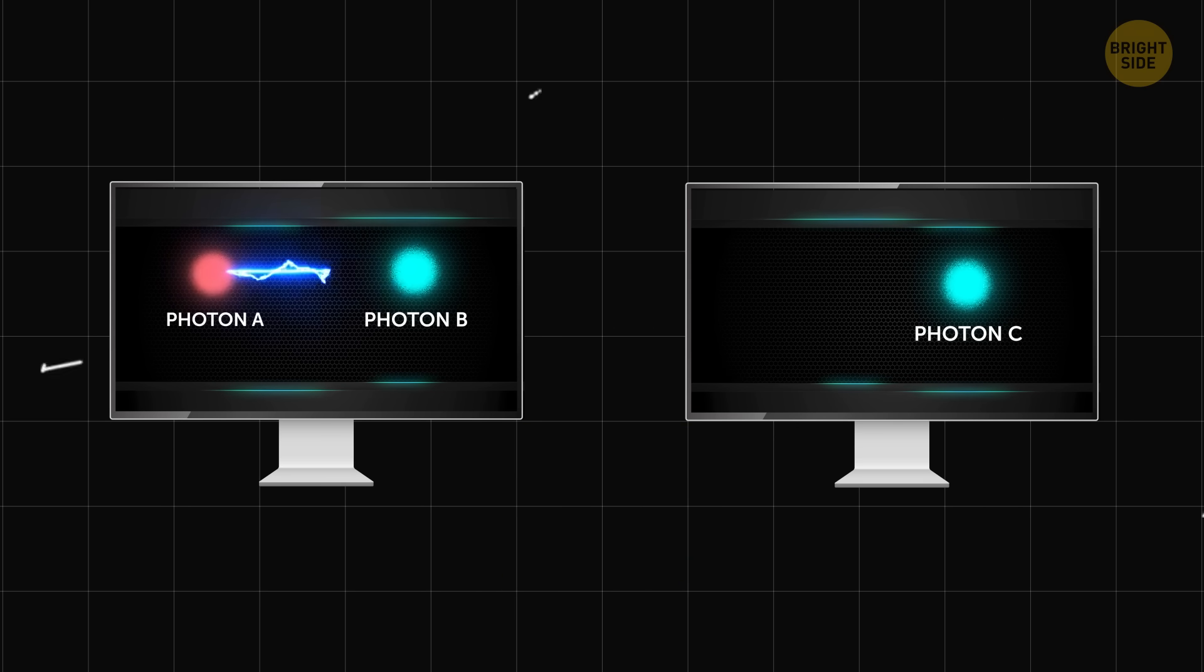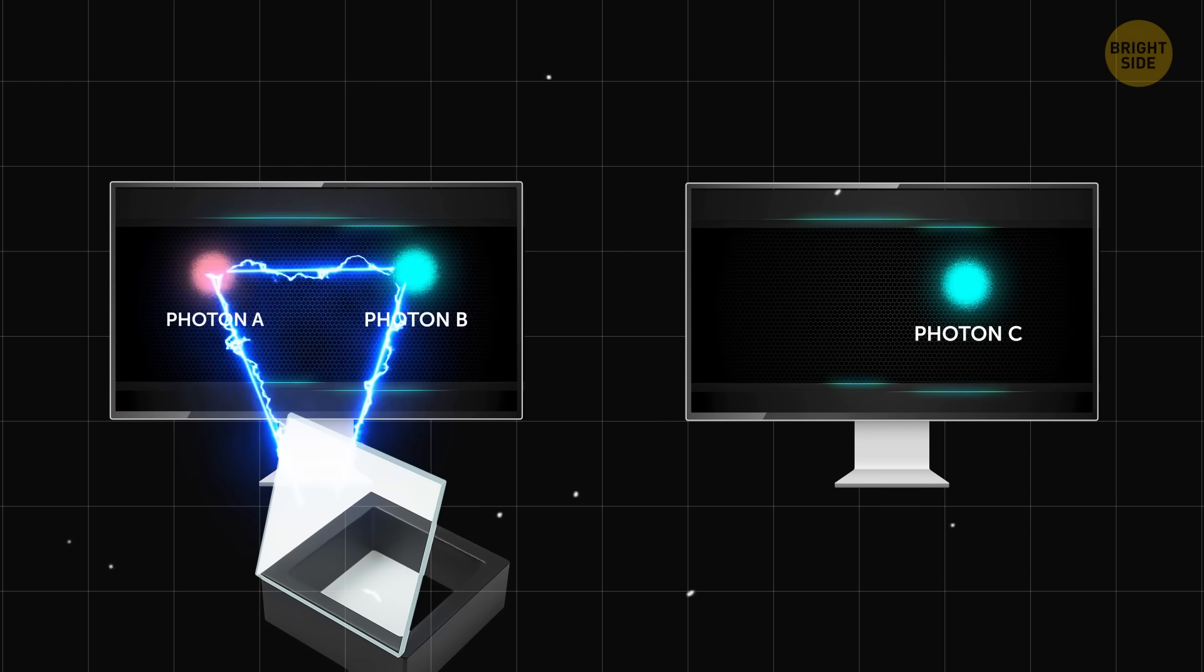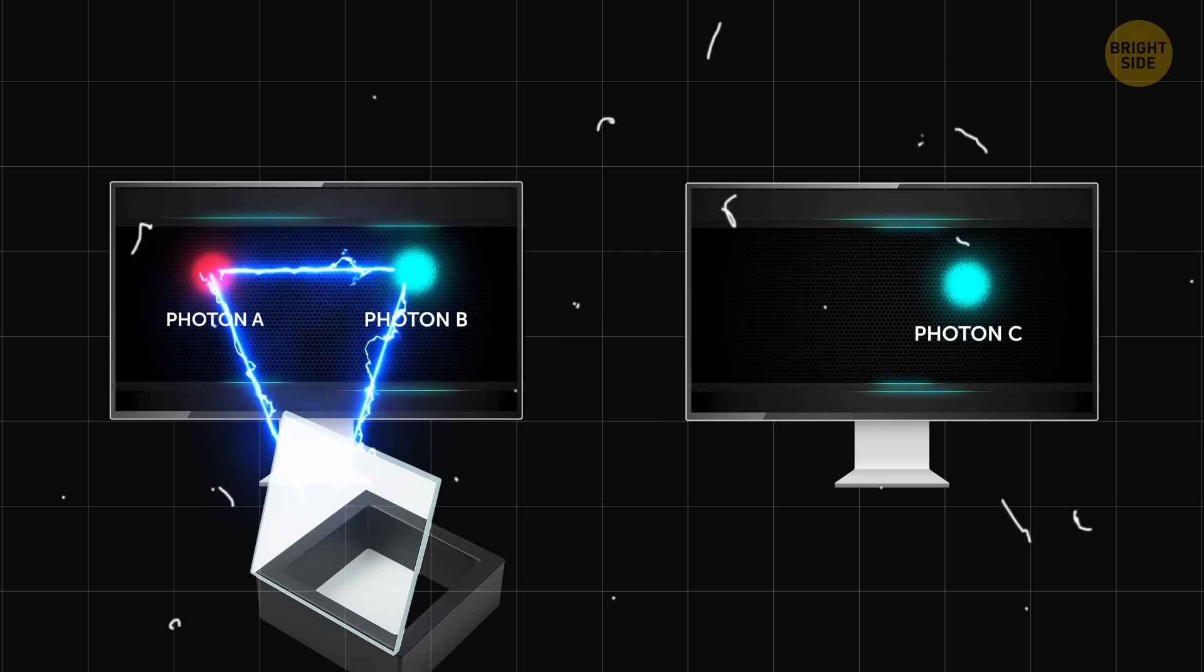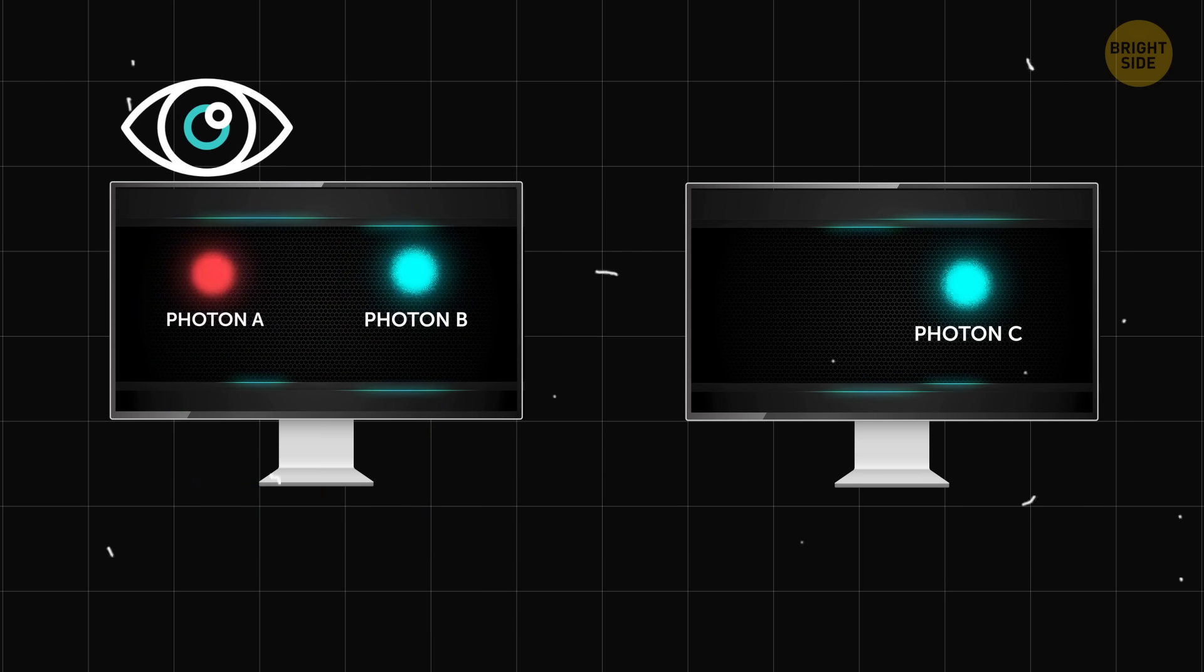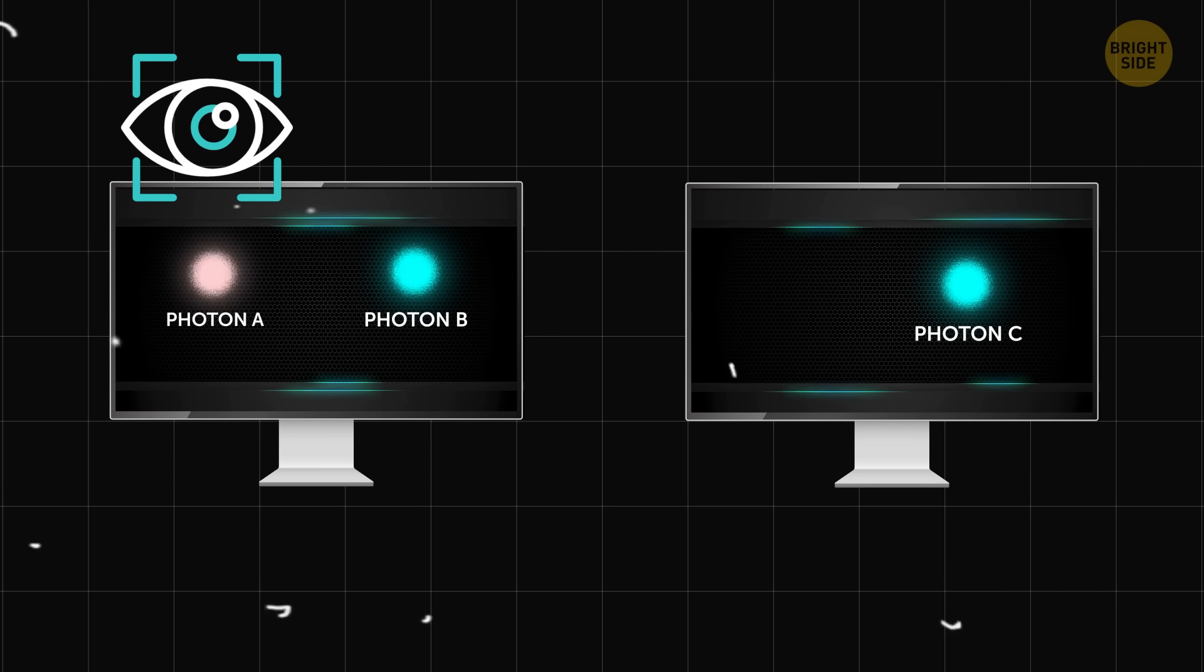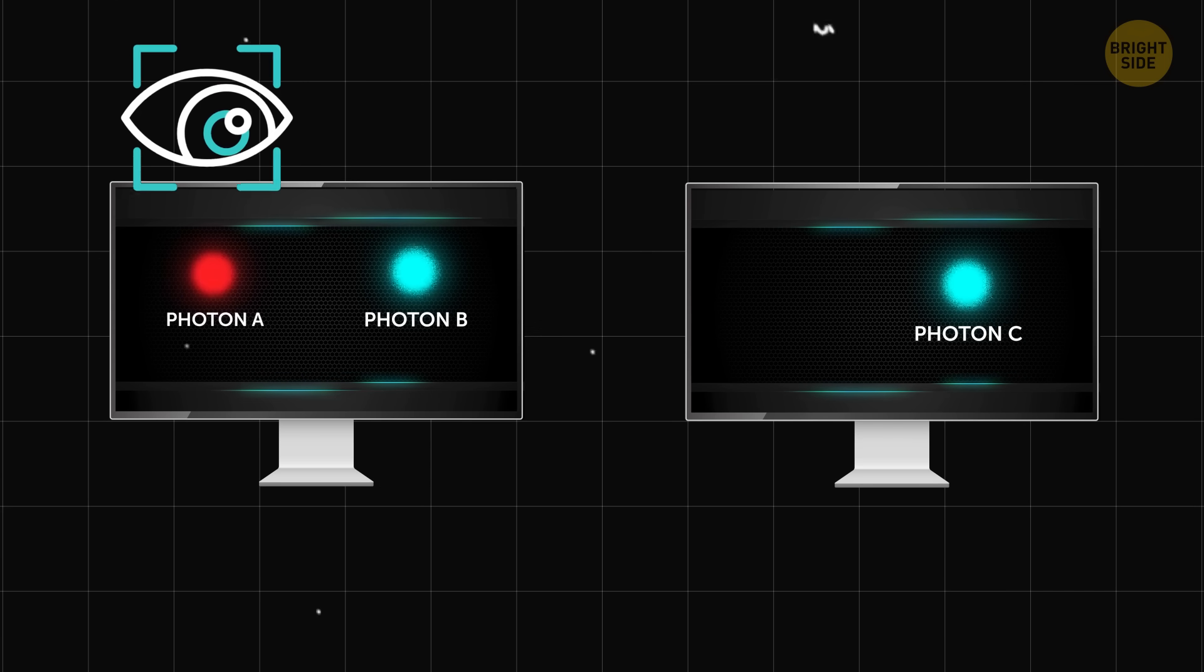Then, you take photons A and B and make them interact with each other. You measure this interaction using a special device. After that, you look at photon A, and it loses its superposition. The magical property of the particle disappears.